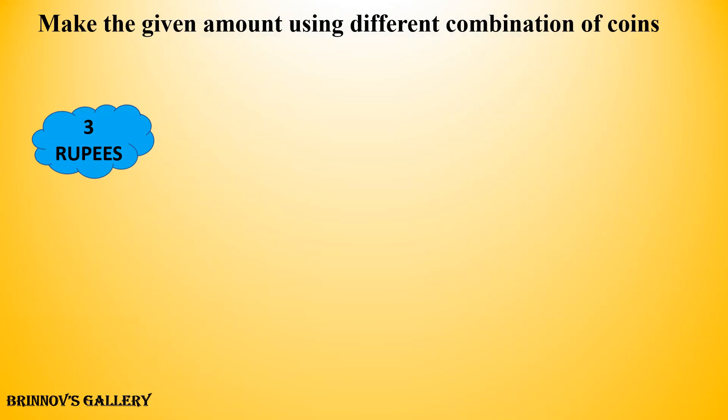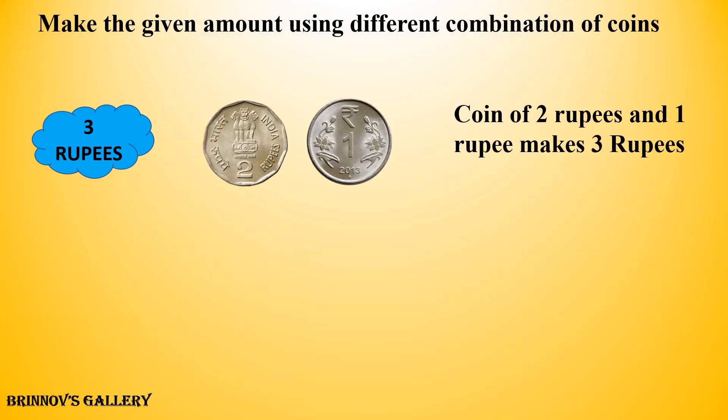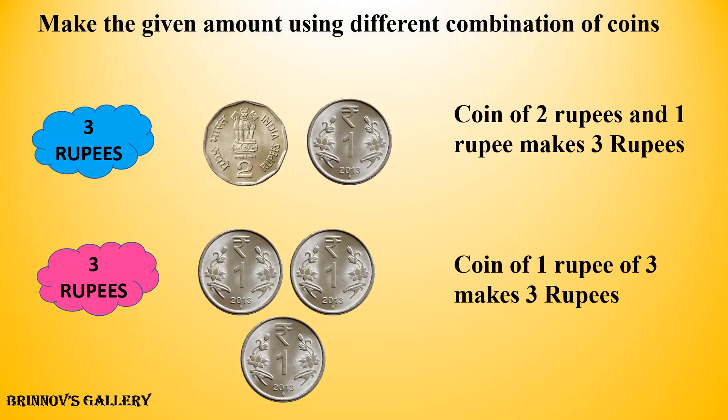2 Rupees: coin of 2 Rupees and 1 Rupee makes 3 Rupees. 3 Rupees: coin of 1 Rupee, three of them, makes 3 Rupees.